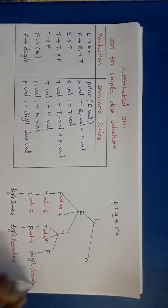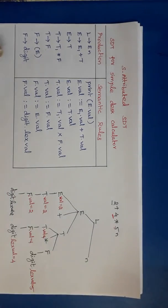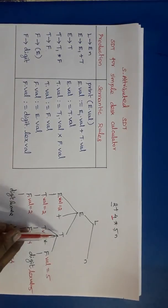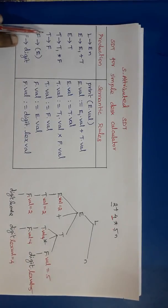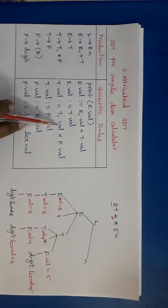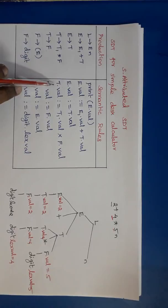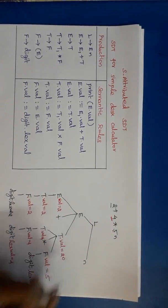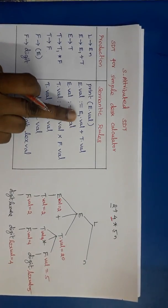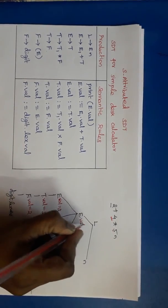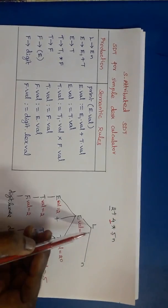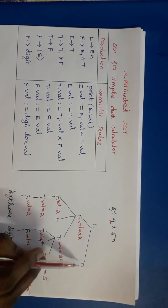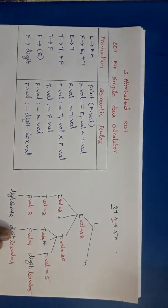Then digit.lexval = 5, so F.val = 5. For T tends to T star F: T.val = T1.val * F.val = 4 * 5 = 20. Then E tends to E plus T: E.val = E1.val + T.val = 2 + 20 = 22. Finally, the semantic action for L tends to E N prints E.val, so 22 is printed and it goes to the new line. This is the annotated parse tree for this example.